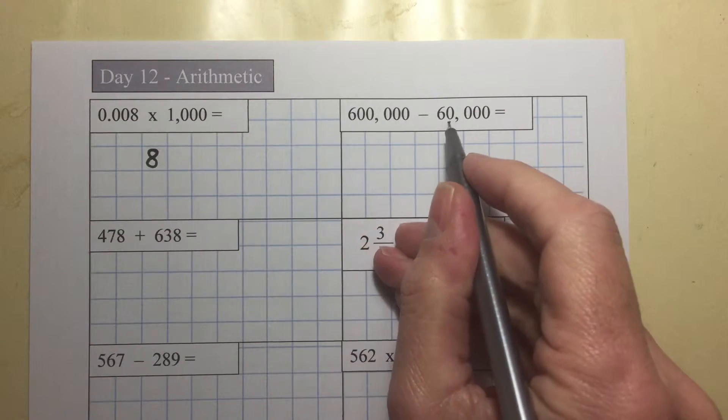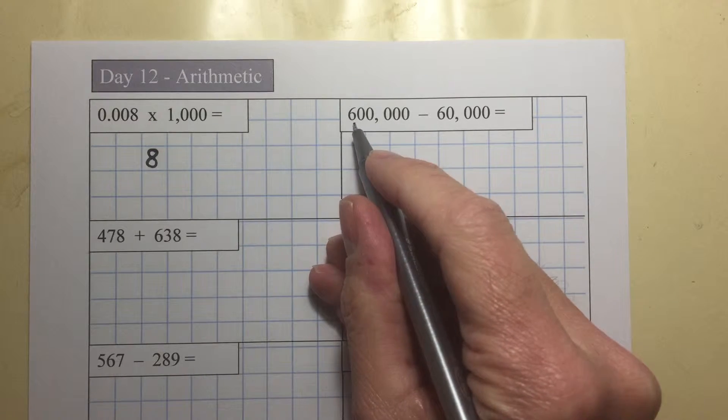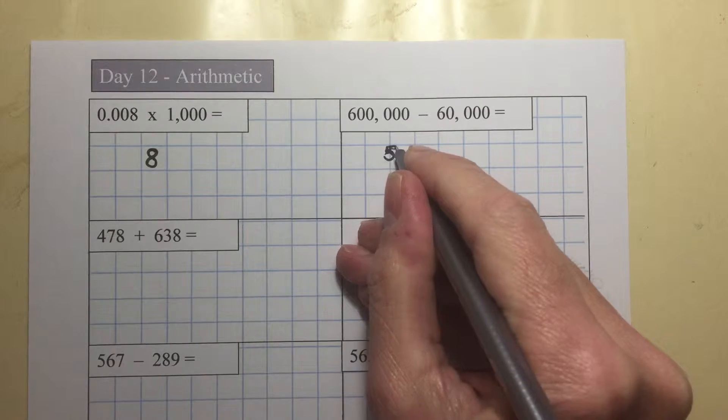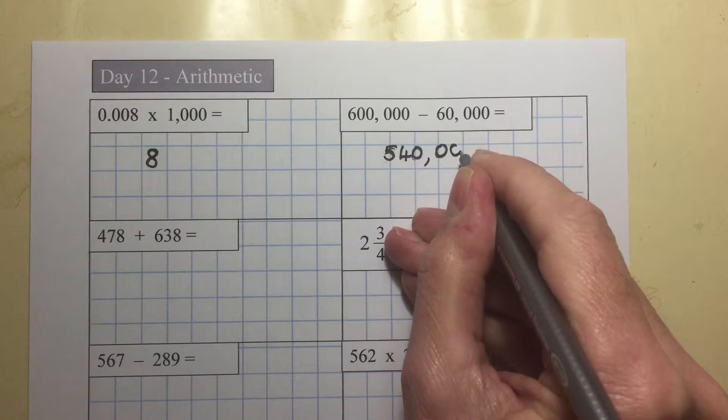600,000 take away 60,000. We'll just think of that as 600 take away 60, which is 540,000.